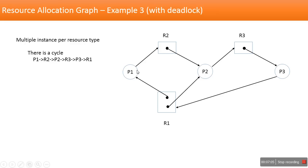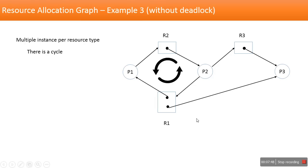P1 holds R1 and wants R2, but R2 is held by P2. P2 is also waiting for R3, and R3 is held by P3. P3 is waiting for R1. All three processes keep waiting and will never complete their execution — so there is a deadlock. This follows our earlier rule: there is a cycle, and there is a deadlock.